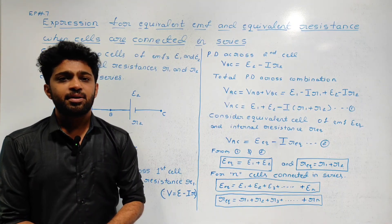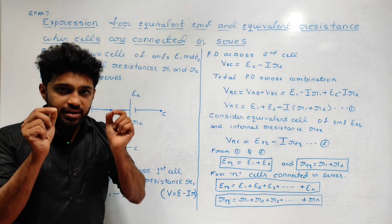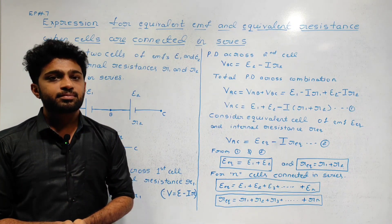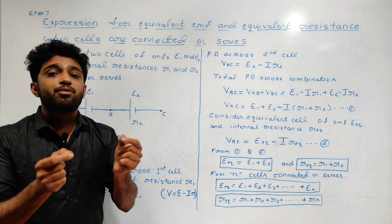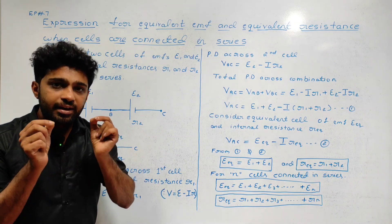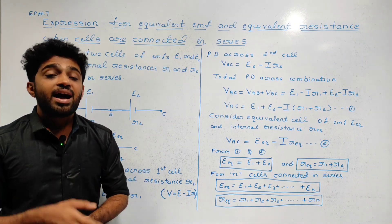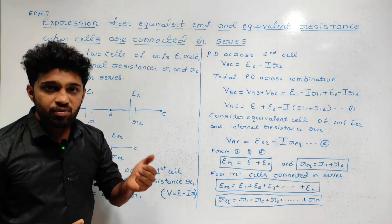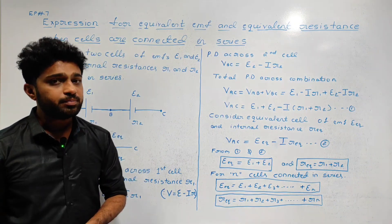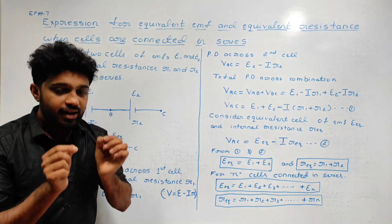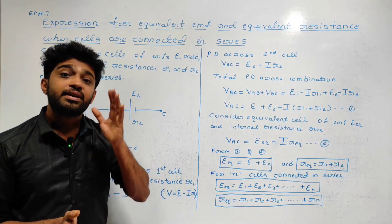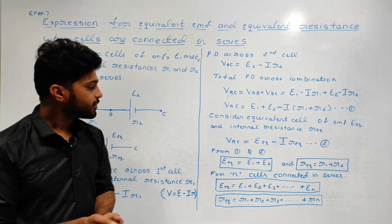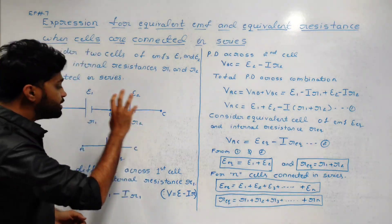We are considering two cells having EMFs E1 and E2 and internal resistances R1 and R2 which are connected in series.